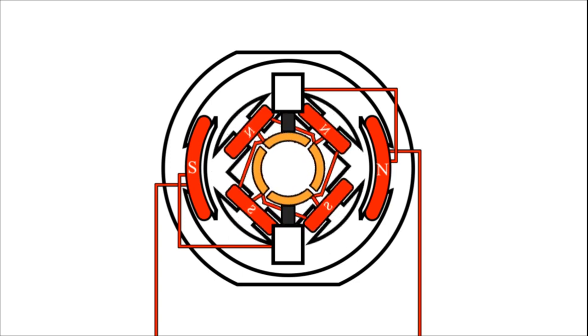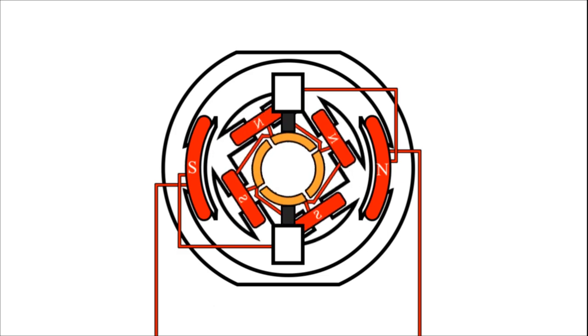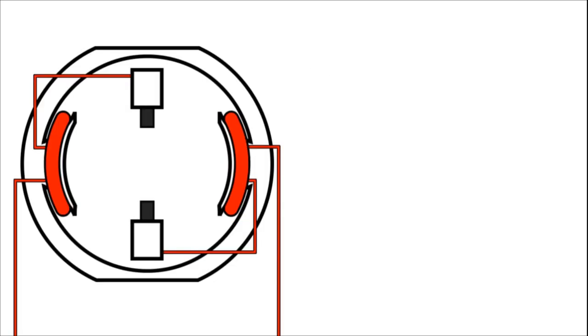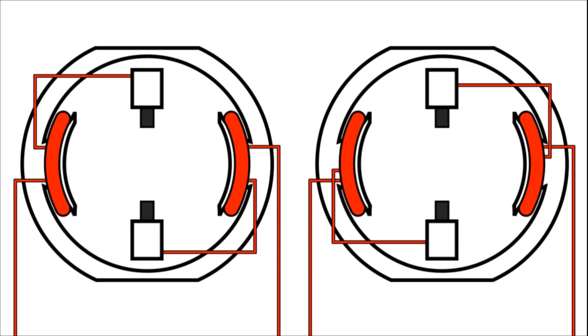The tip here is whenever you find your armature spinning in the opposite direction, try swapping the carbon brush connections. It may solve your problem.